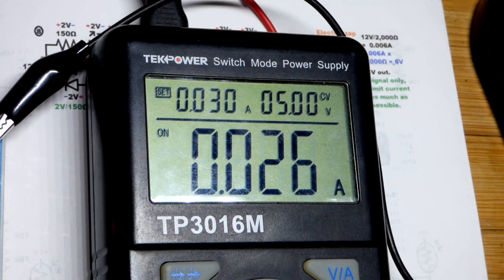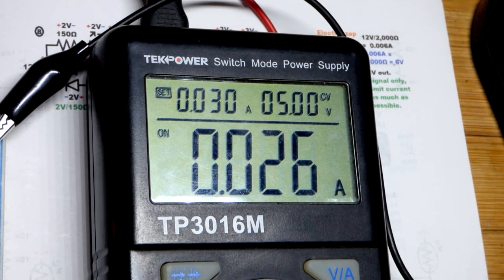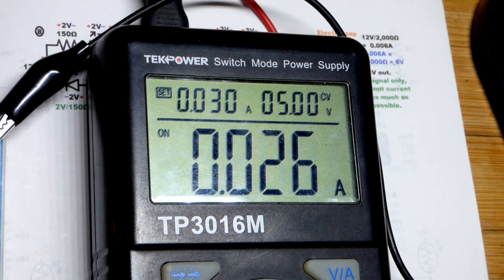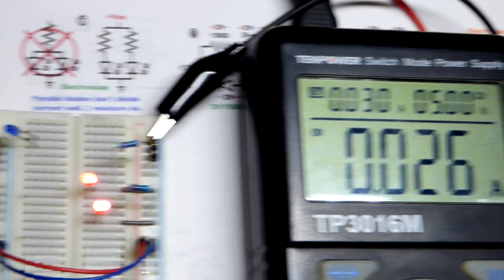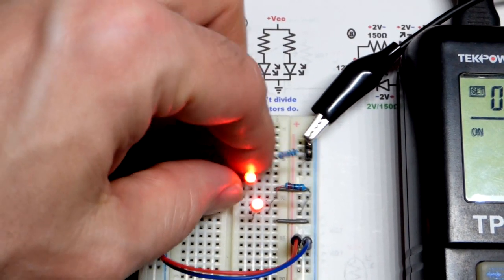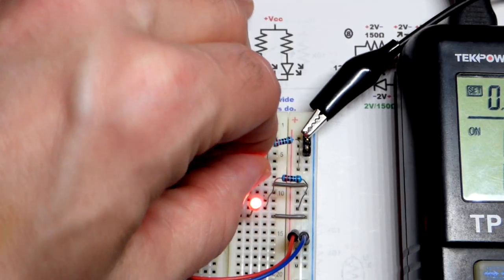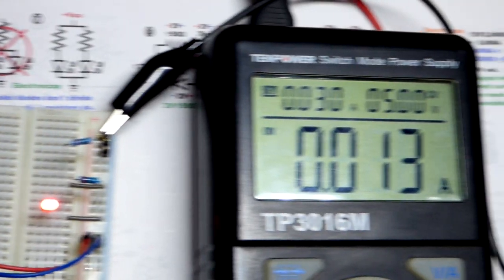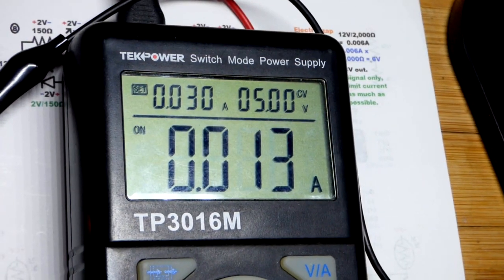That actually lines up right there. Before I was saying 24. This isn't as accurate as a multimeter. In any case we got about 13 milliamps of current going through both LEDs. I can show that if I yank one, current goes down in half right there, 13 milliamps of current.